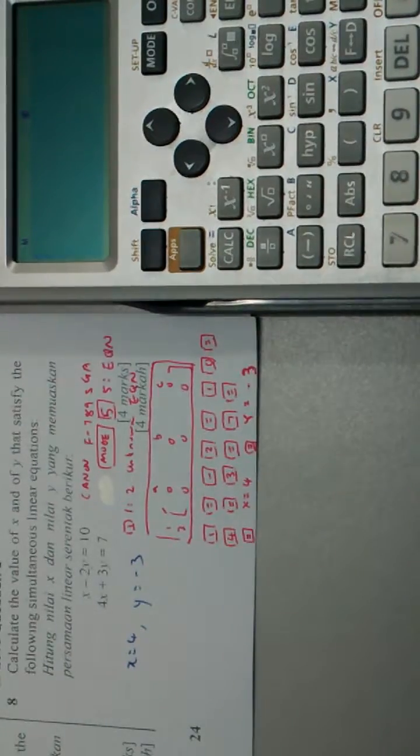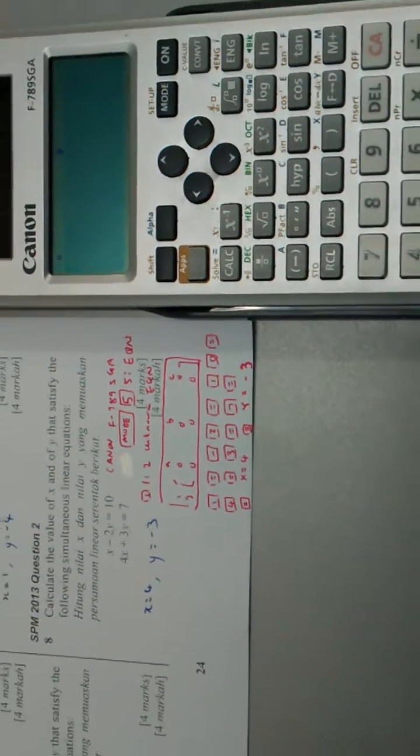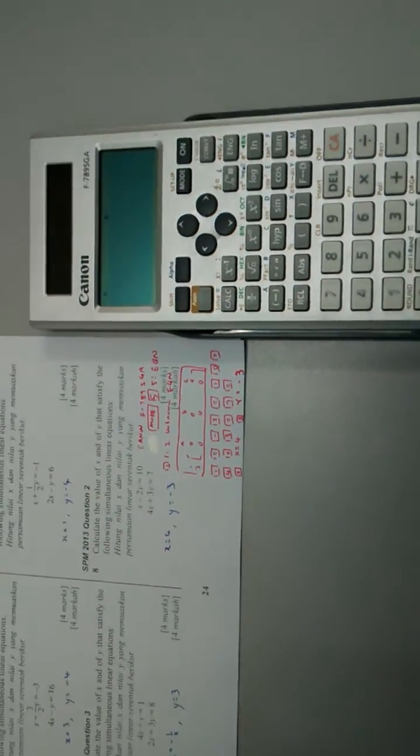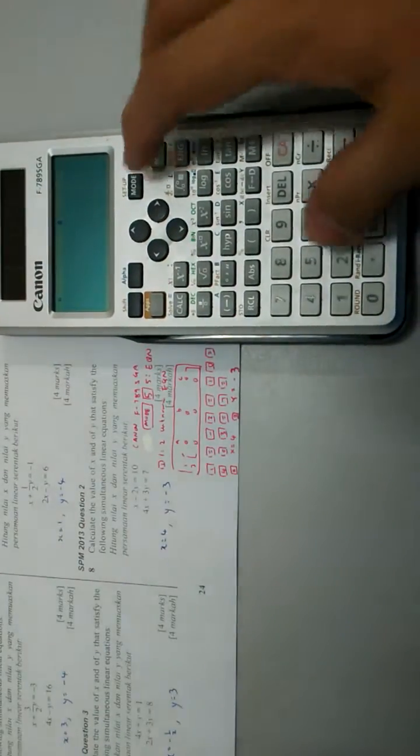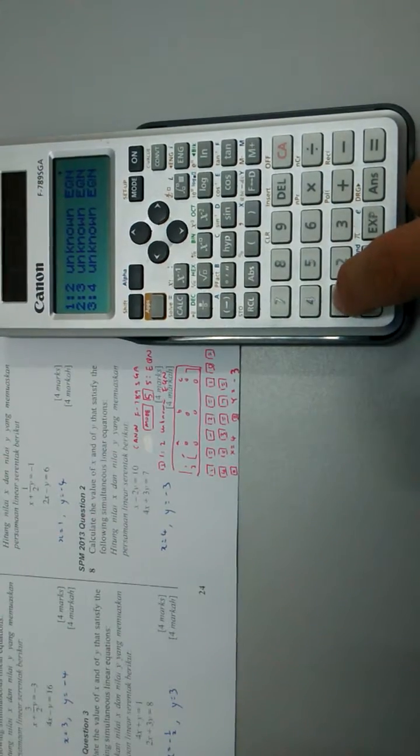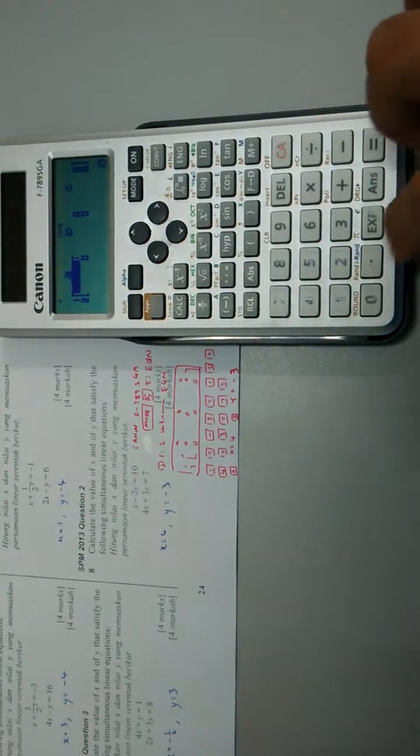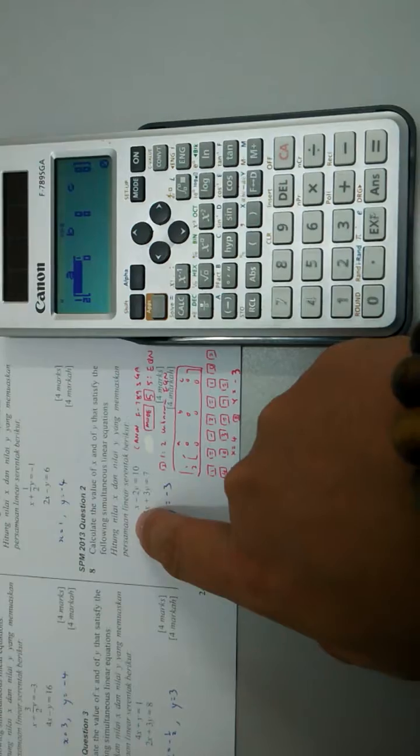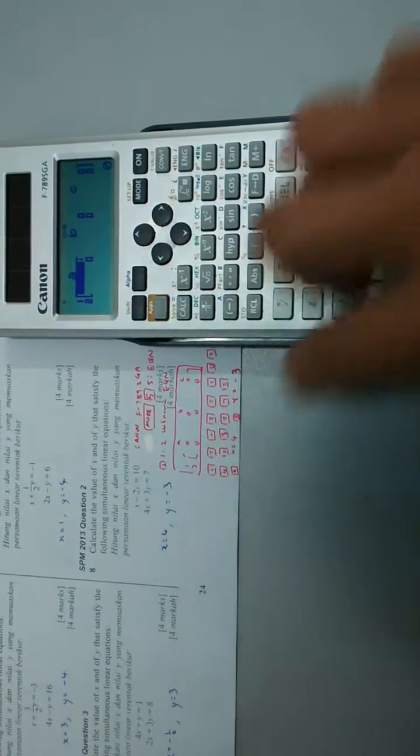First we choose mode and number 5 for equation, number 1 for two unknowns, and we key in the coefficients for x, y, and the constant.